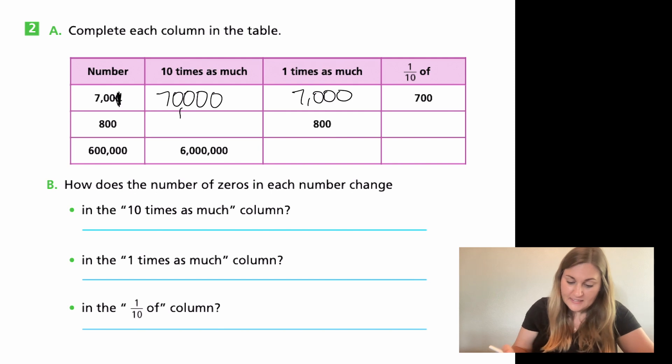Alright. Now moving down to that second row, 800. I want ten times as much as 800. So I'm going to write that number 800, but again, multiplying by ten, I'm going to add one more zero, making my number 8,000. They gave us the one times as much, which is 800. Now I need to find out what is one tenth of 800. Again, what I'm going to do is I'm going to cross out one of those zeros. I'm going to take a zero away, divide by ten, or one tenth of, and the number it's going to leave me with is 80.